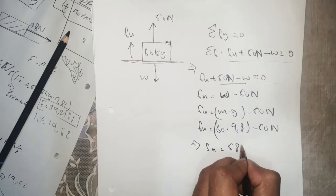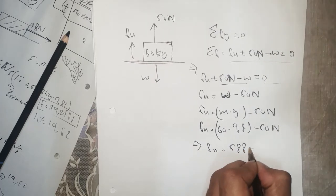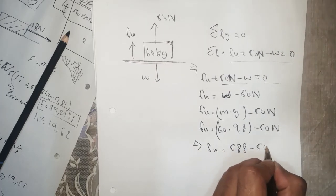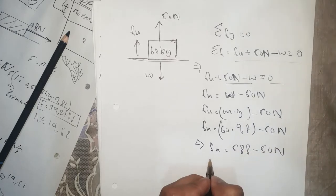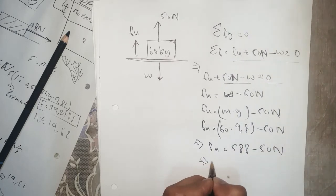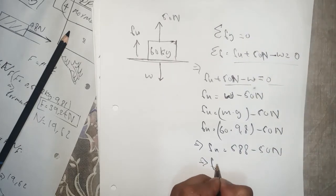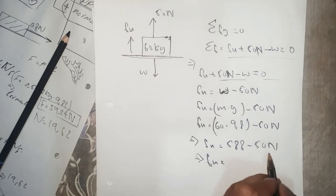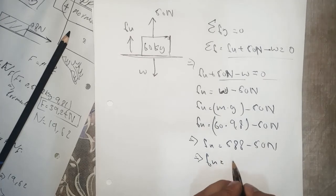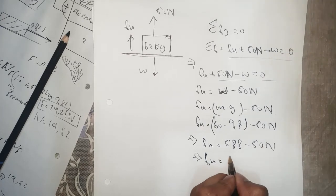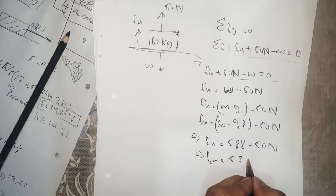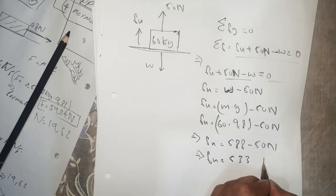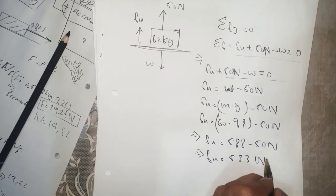60 times 9.8 equals 588, minus 50 Newtons. So finally, our normal force is equal to 538 Newtons.